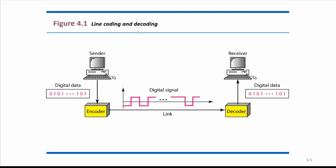A sample data communication scenario is given: whenever a sender sends data to a receiver, that data is in the form of digital data — zeros and ones. It needs to be sent through a link or channel. Since the channel transmits signals, not raw data, we need to convert digital data into digital signals using encoders. This is why it is called line coding or line encoding.